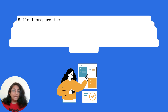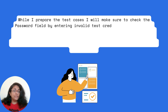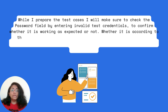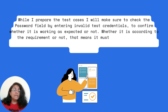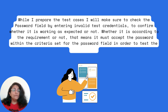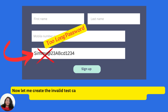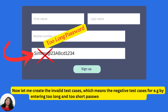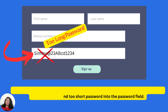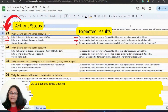While preparing the test cases, I will make sure to check the password field by entering invalid test credentials to confirm whether it is working as expected and whether it is according to the requirements. It must accept the password within the criteria set for the password field. Now let me create the invalid test cases — the negative test cases — by entering too long and too short passwords. As you can see in the Google Sheet, I have created the invalid test cases for these.